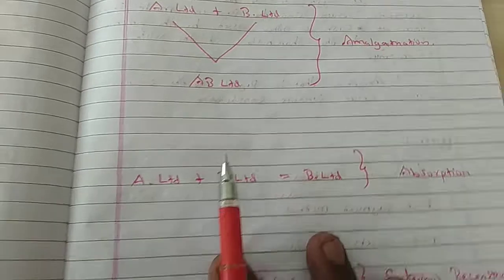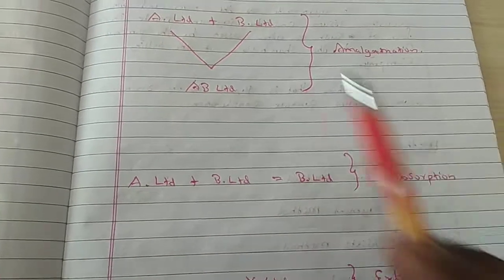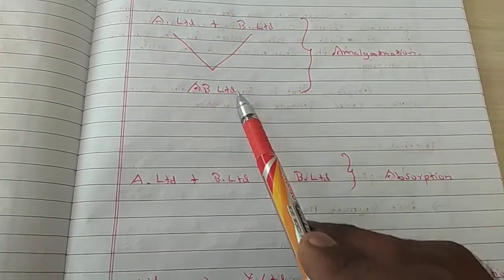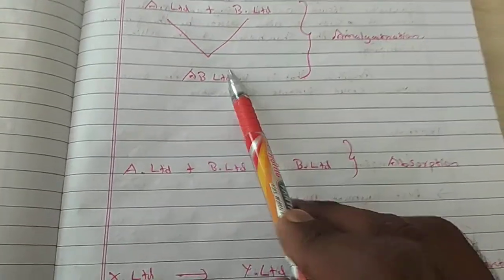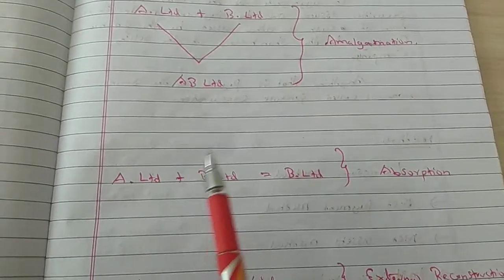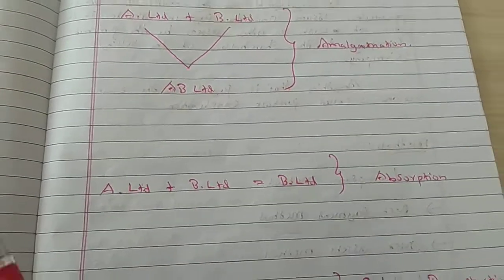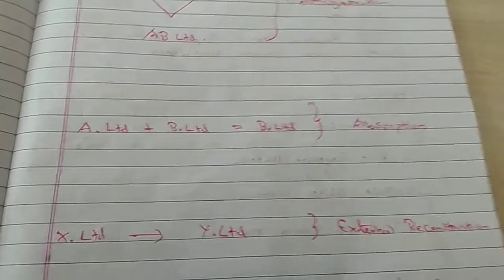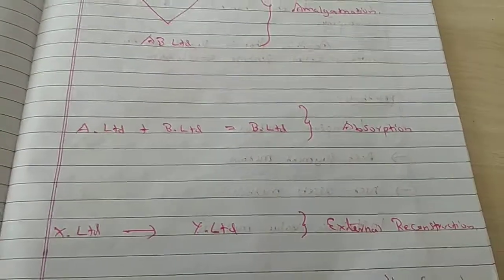So, to clarify: Amalgamation means when two companies are joined together to form one new company. Absorption means that one company is already existing and absorbs another. This is very simple. The third case is External Reconstruction.